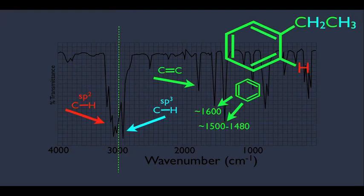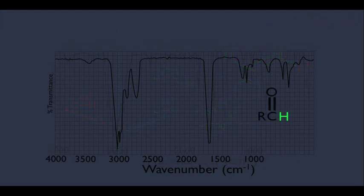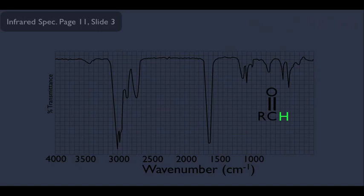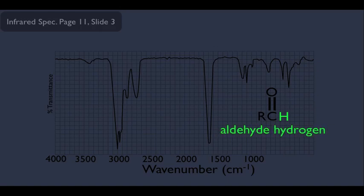Now let's focus on another type of CH bond — the aldehyde. In an aldehyde, the carbonyl carbon is doubly bonded to oxygen and also singly bonded to a hydrogen. Referencing the 3000 mark, the aldehyde CH peaks appear way over to the right, corresponding to an absorption around 2600 to 2900. These peaks are usually plain and obvious, and seeing them that far to the right of the 3000 mark is strong evidence that the molecule is an aldehyde.